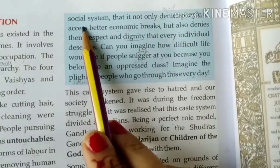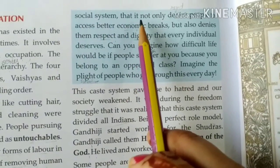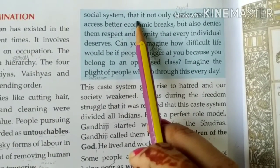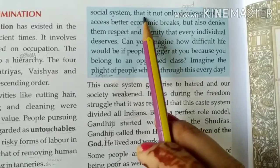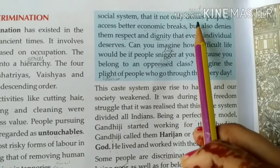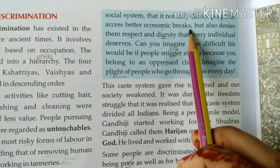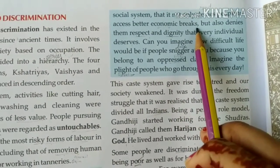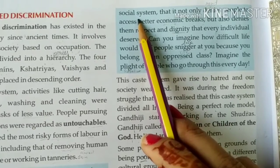This small incident from Phule's life clearly shows that the caste system is very deep-rooted in people's thoughts. This social system has been present since ancient times. It is not easy to break, as it does not allow all caste people equal economic opportunities or equal standing in society.